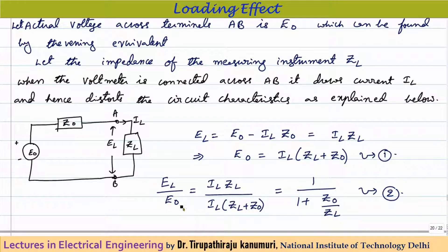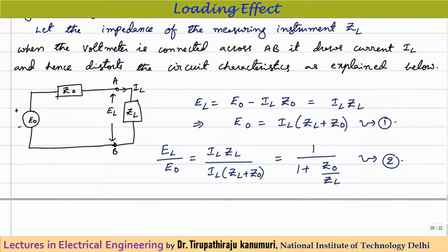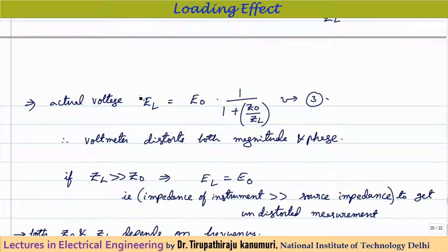Taking the ratio of the actual measured voltage EL to the ideal voltage E0: EL/E0 = (IL × ZL) / (IL × (ZL + Z0)). Simplifying — IL cancels — this gives EL/E0 = 1 / (1 + Z0/ZL), or equivalently: EL = E0 × 1/(1 + Z0/ZL).